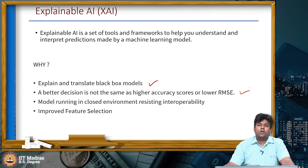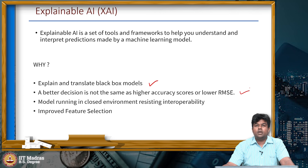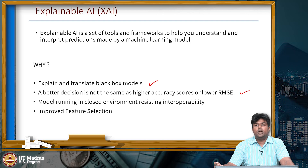XAI framework will provide an end-to-end relationship and representation of how every individual feature is affecting the final model output. A better decision is not always tied to accuracy or RMSE. Higher accuracy or lower RMSE are model performance metrics that explain how accurate a model is. However, for a business decision, it not only depends upon the model's metrics but also upon the underlying data which has been used. Hence, there should be a clear relationship between the data and the model's final prediction in order to make any business decision.